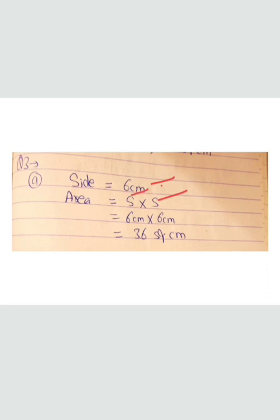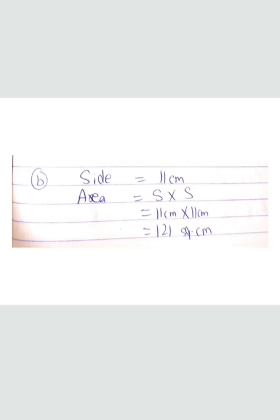Let's see how we write it. Side is 6 centimeters, area is side multiplied by side — 6 cm × 6 cm = 36 square centimeters. For part B, side equals 11 centimeters, area equals side × side: 11 cm × 11 cm = 121 square centimeters.